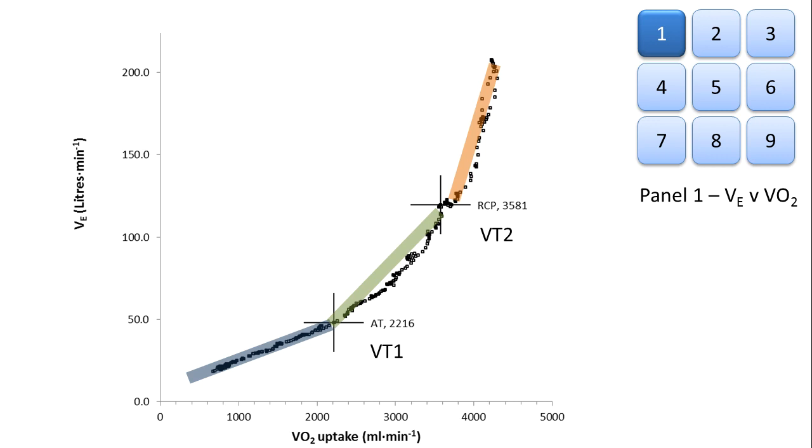If you do this and plot the data against ventilation on a semi-log plot, the straight line obtained can be used to calculate the OUES, the oxygen uptake efficiency slope.